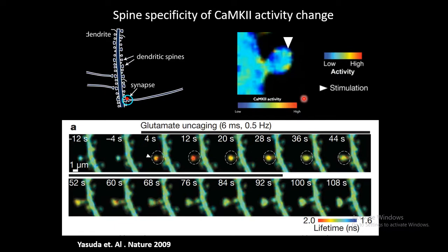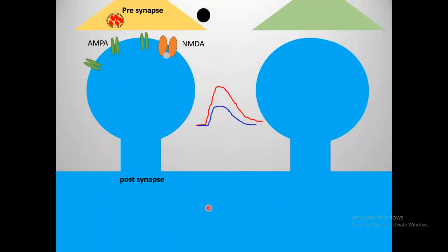CaMKII activity is truly important for plastic changes. With advanced technologies, researchers can selectively stimulate synapses and monitor CaMKII activity in real time using fluorescence resonance energy transfer (FRET). CaMKII activity lasts for roughly 60 seconds after stimulation, and just after this activity there is a correlated increase in synaptic volume, suggesting CaMKII can both functionally and structurally alter synapses. CaMKII activity is downstream of calcium and the high-frequency stimulus.